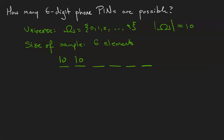I also have ten options for my second digit because generally when we have passwords or pins we can use the same digit over and over again. We're not supposed to but we can. We also have ten options for the third digit, the fourth digit, the fifth digit, and the sixth digit.